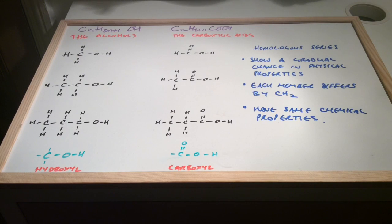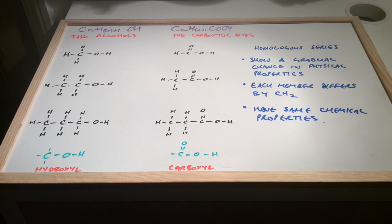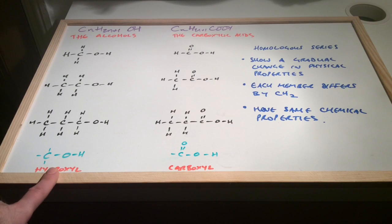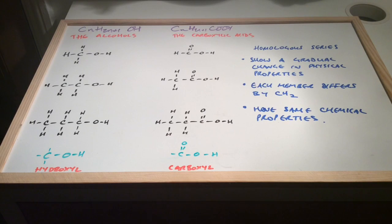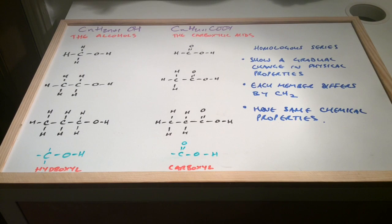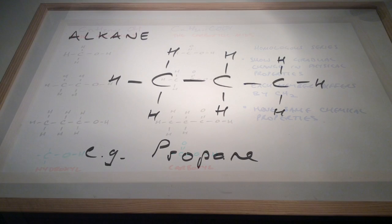Members of the same homologous series have the same chemical properties, and that's because they contain the same functional group. Remember, the functional group is the part of the molecule responsible for its reactions. In the case of the alcohols it's the hydroxyl group, for carboxylic acids it's the carboxyl group, and for alkenes it's the C double bond C.